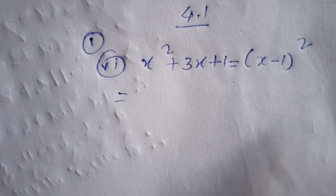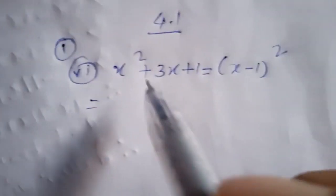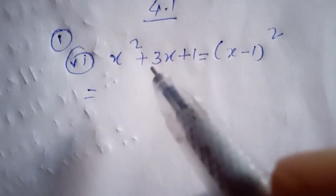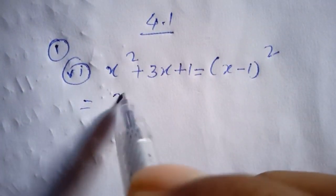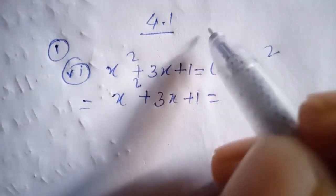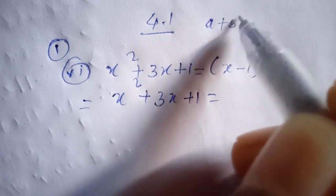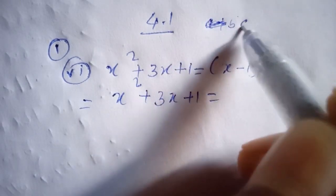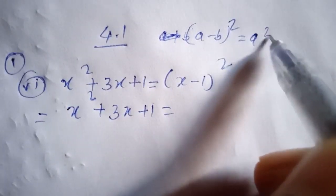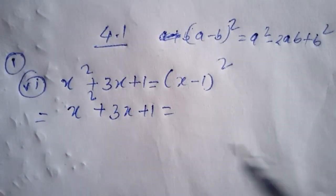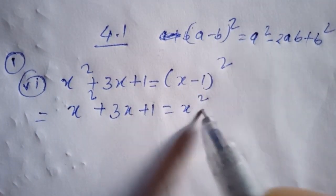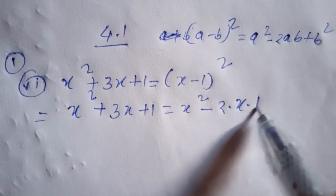Problem 6.1: x squared plus 3x plus 1 equals (x - 1) squared. The right side expands using the formula (a - b) squared equals a squared minus 2ab plus b squared. So we get x squared minus 2x plus 1.